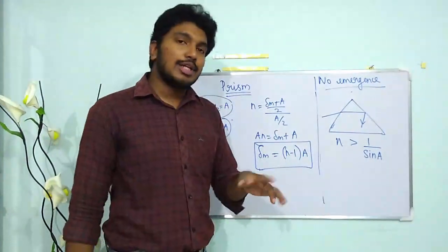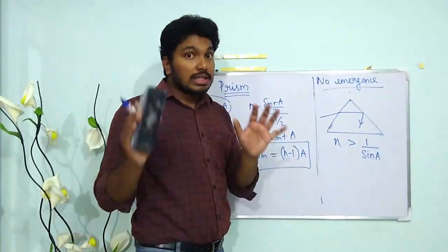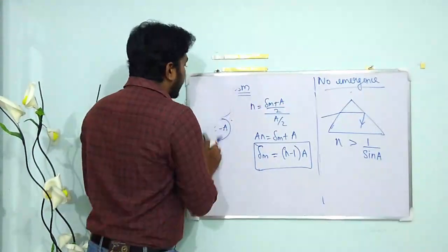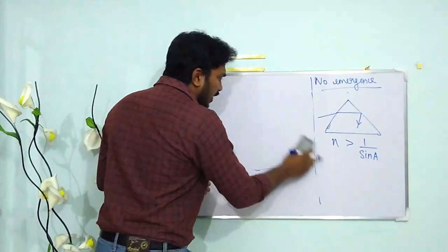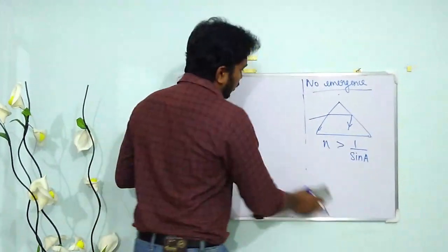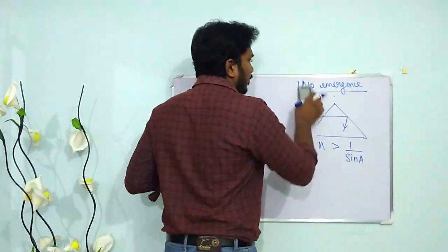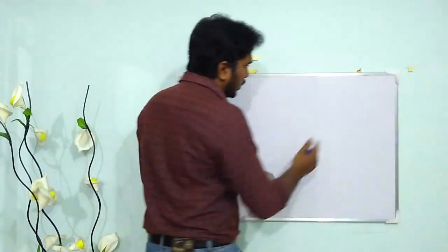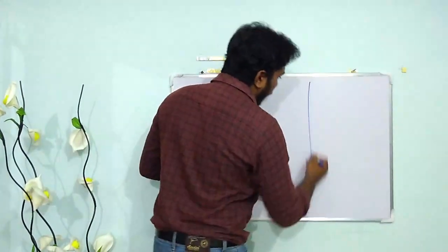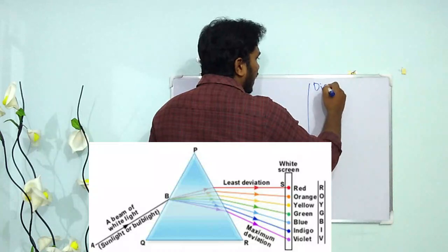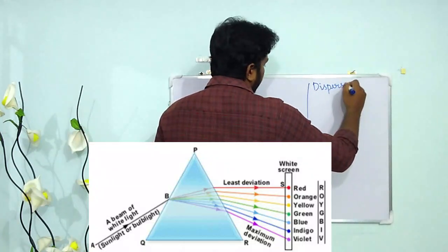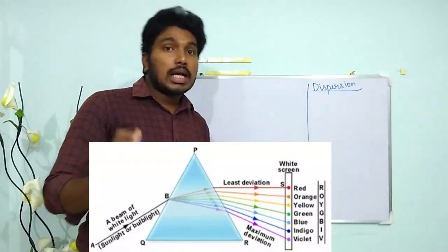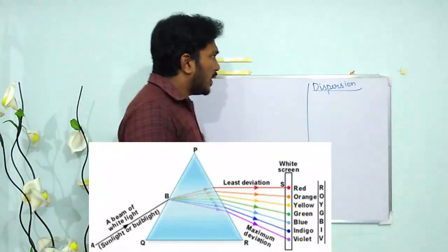Now let's move on to dispersion from a prism. Dispersion is the splitting of light into its component colors. When white light passes through a prism, it gets separated into its component colors.